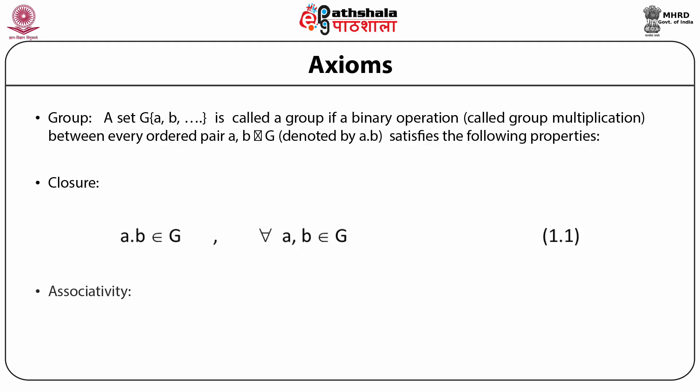We next have the property of associativity, which says that for every element A, B, C belonging to the group G, A·(B·C) = (A·B)·C. This means that whether we first multiply element B with C and then with A, or we first multiply elements A and B and then with C, we get the same result. For example, with real numbers 5, 6, 7, whether you multiply 5 and 6 first and then 7, or 7 and 6 first and then 5, you get the same result.